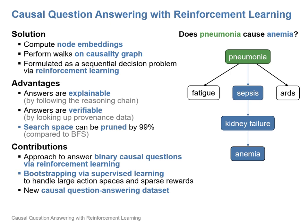To summarize our contributions: first, we answer binary causal questions with reinforcement learning. Second, we introduce a supervised bootstrapping procedure to deal with the problem of large action spaces and sparse rewards. Third, we construct a new causal question-answering dataset. In our paper, you can find many more details, for example on the causality graph, our reinforcement learning agent, and evaluation results.